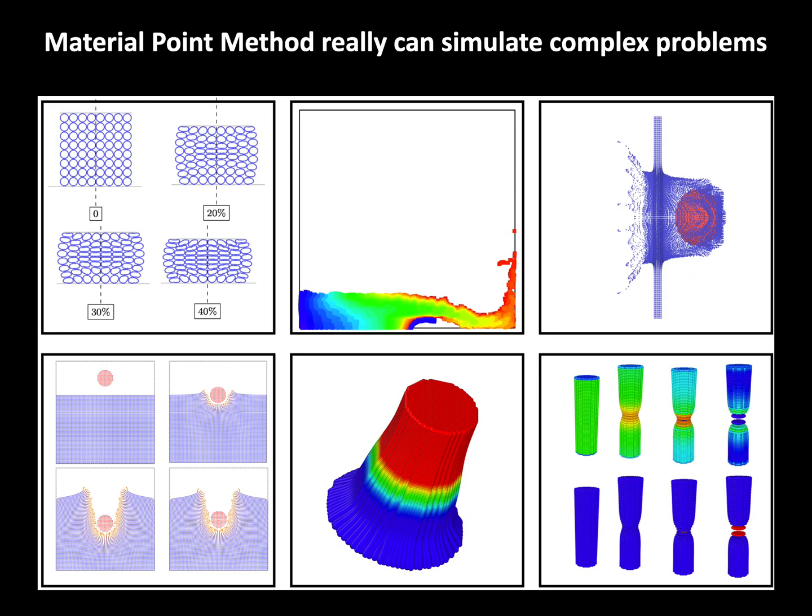Now we move to the material point method. And this method is also simple. I always work with simple methods. I stay away from complicated methods. And it can handle very complicated, quite complicated problems that I show here. This is the cellular structures. And we compress it up to 40%. We have a lot of contacts. Okay. Hundreds of contacts and even self contact. There is fluid and solid interaction. This is the high velocity impact problem. This is also high velocity impact problem. And this is a fracture of metal.